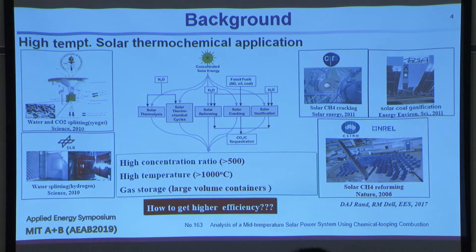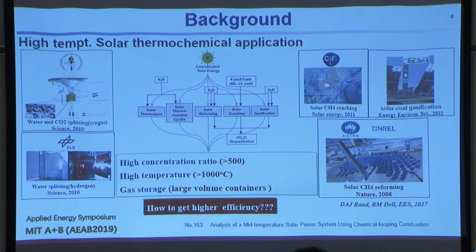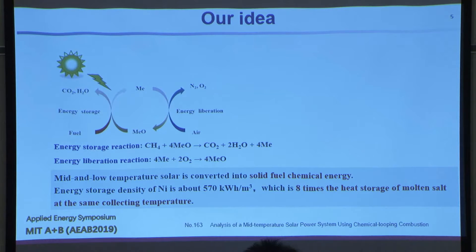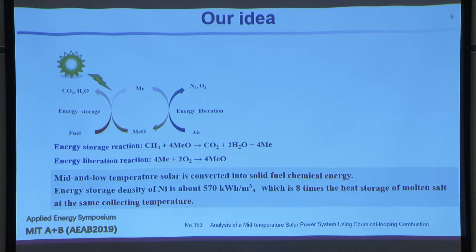For gas storage, we need large volume containers, so cost is a big problem. To get higher efficiency, one idea is to combine solar energy with a very smart chemical process — chemical looping combustion.